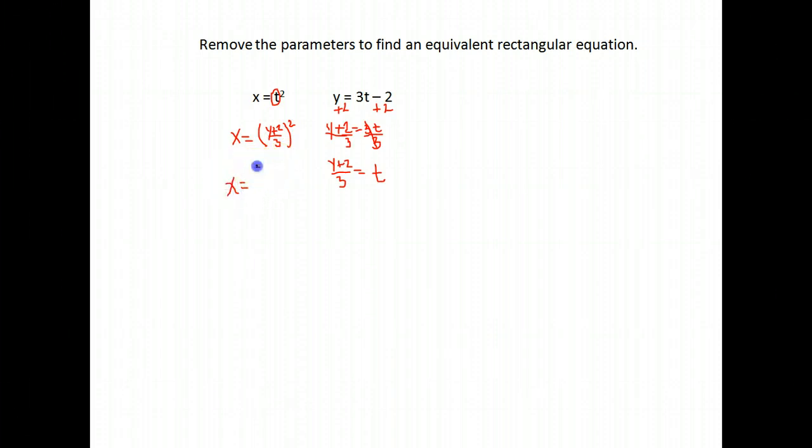I want to simplify that as much as I can. So when you're squaring a fraction, you square the top, I square y plus 2 squared, and you square the bottom or the denominator. So I get x equals y plus 2 squared over 3 squared is 9.